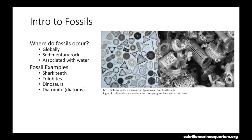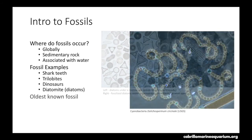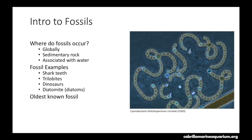This photograph shows live diatoms under a microscope on the left, and fossilized diatoms under a microscope on the right. The last example is of the oldest known fossil, which is about 3.5 billion years old from the Archean Eon — a cyanobacteria found in Australia. The picture here shows a live cyanobacteria from the USGS.